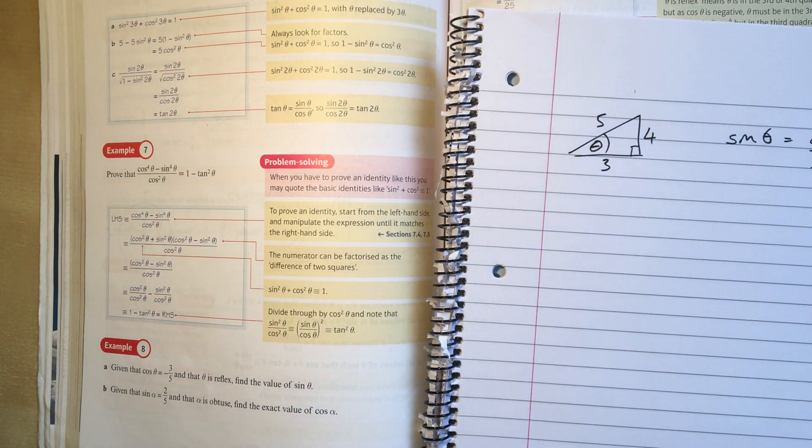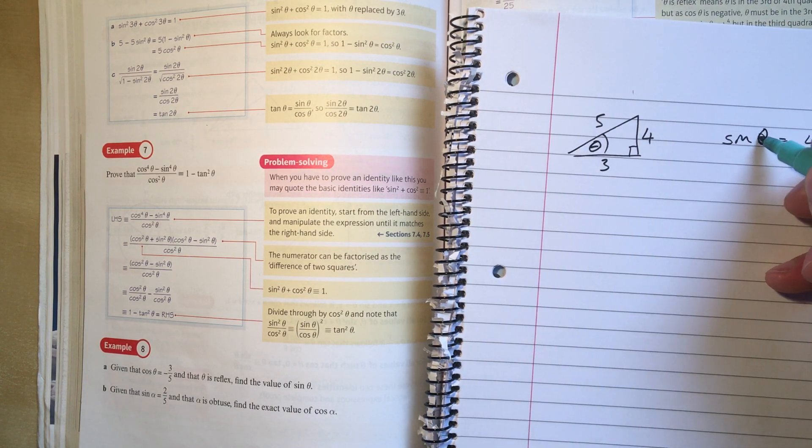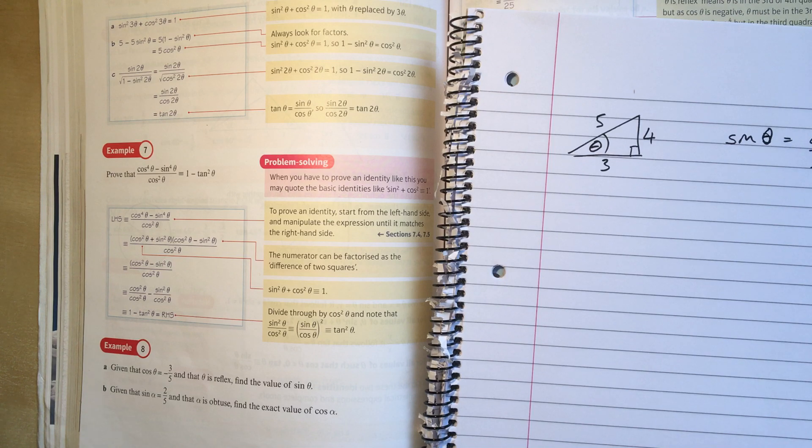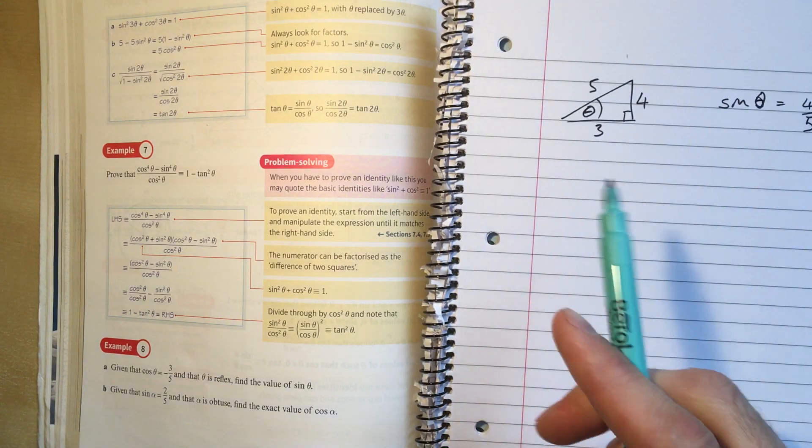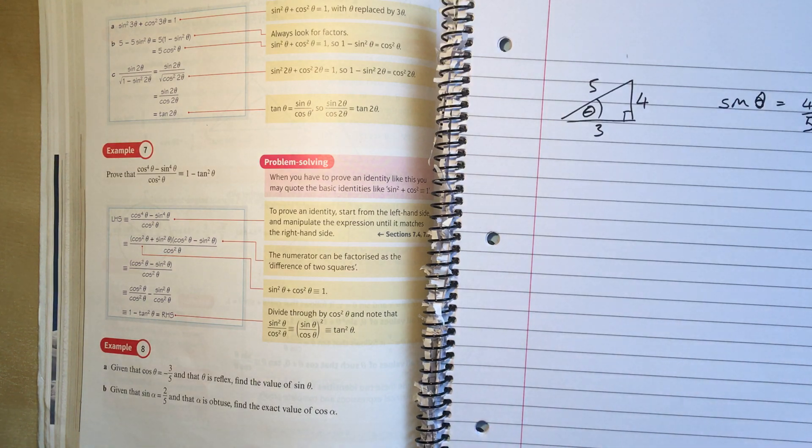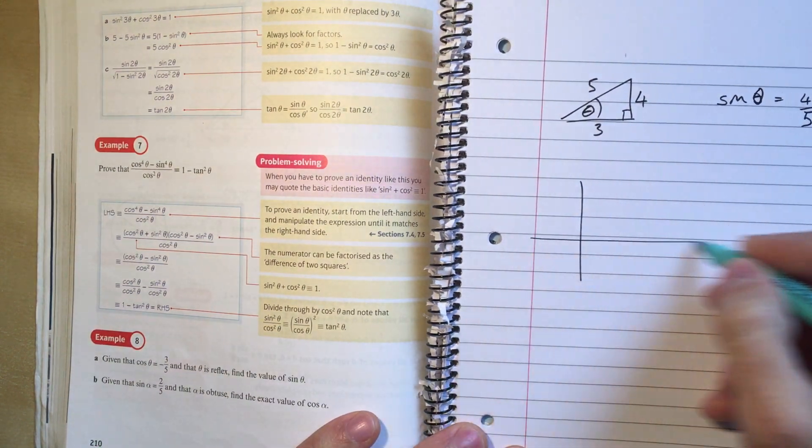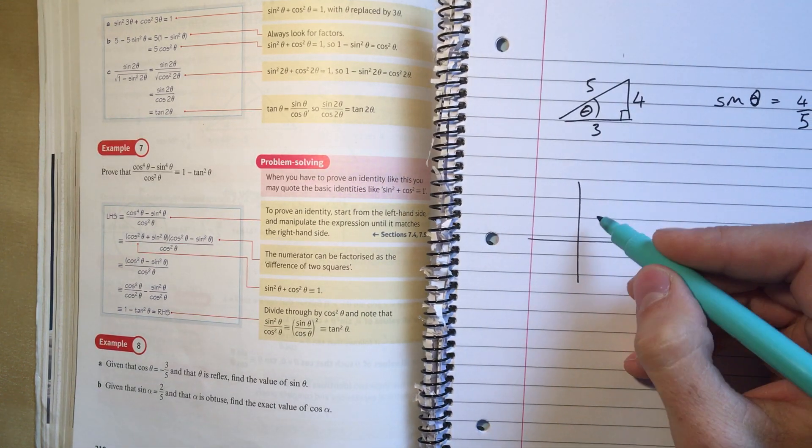Now if we had that question with acute angles, if theta was acute, we'd have finished. But we didn't have theta being an acute angle, we had theta being a reflex angle. So everything here is going to work except we might have to put a minus sign in. That's because the graphs are the same in the acute part of the graph.